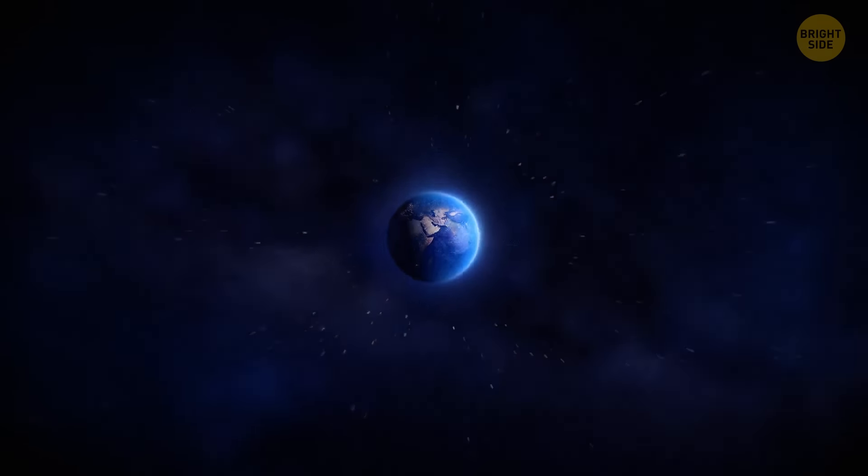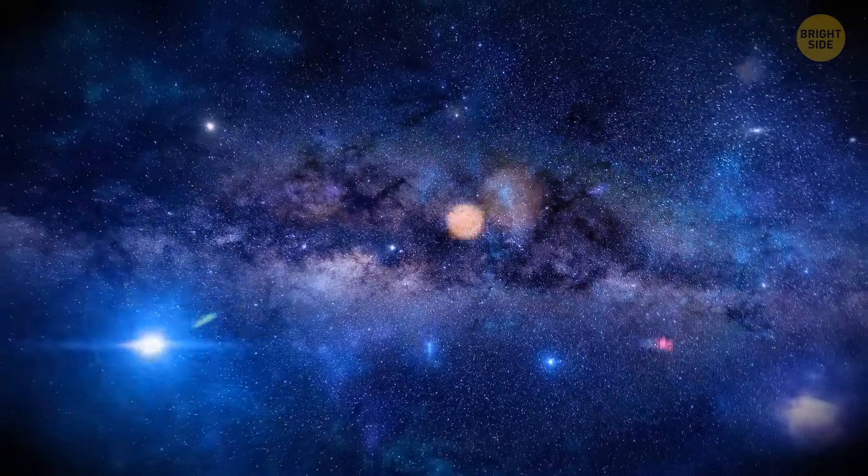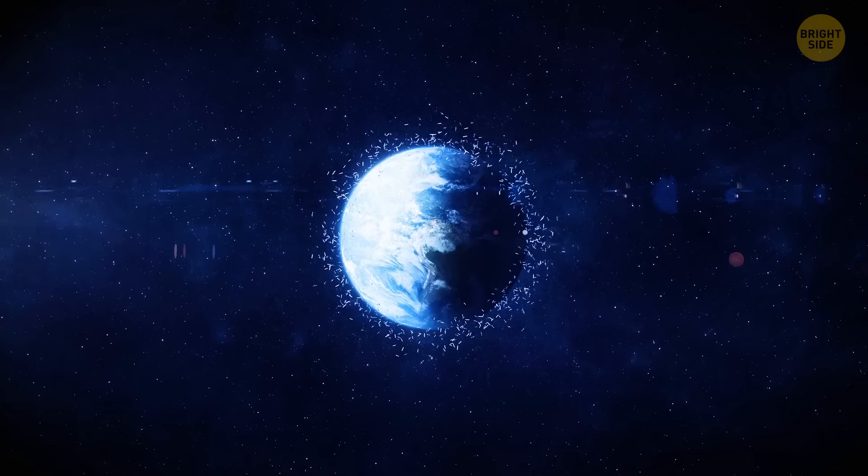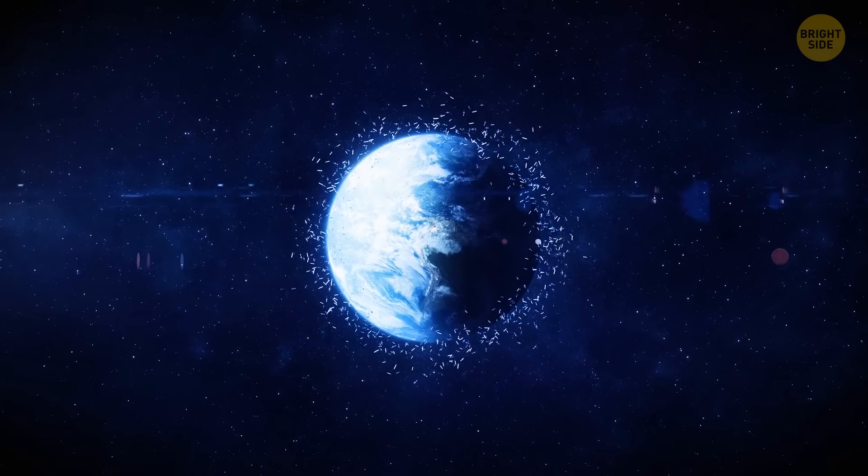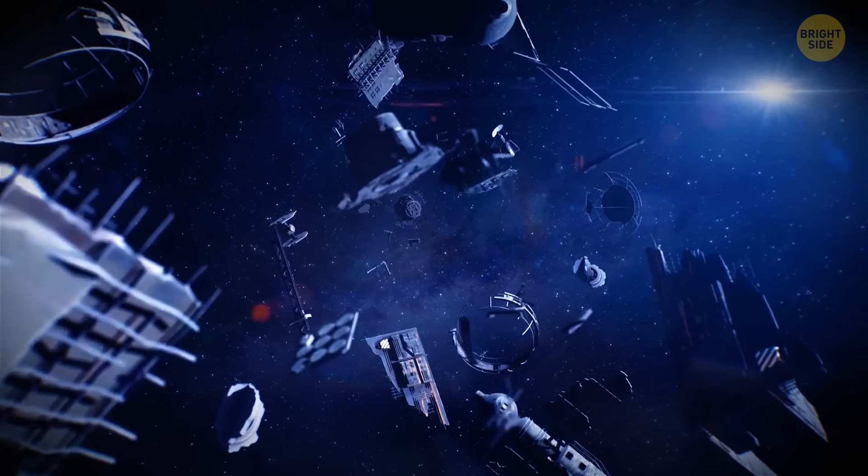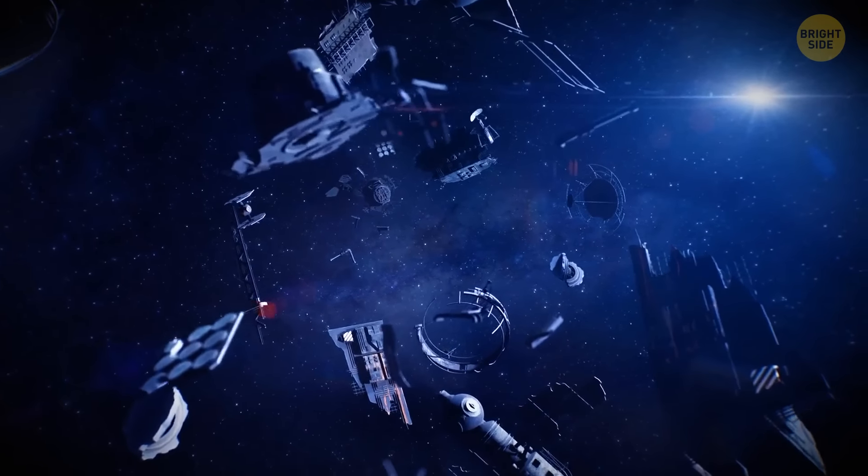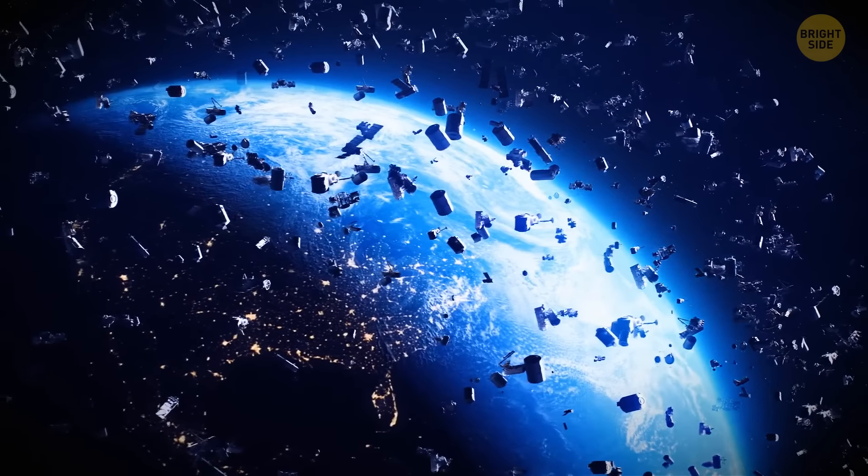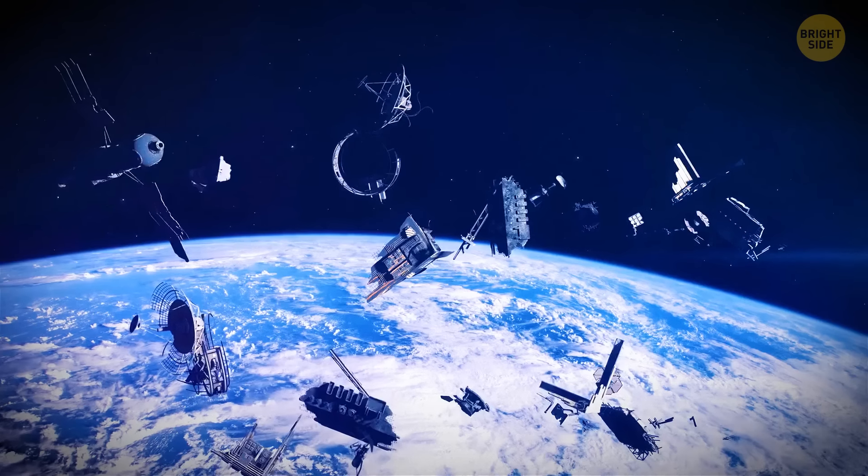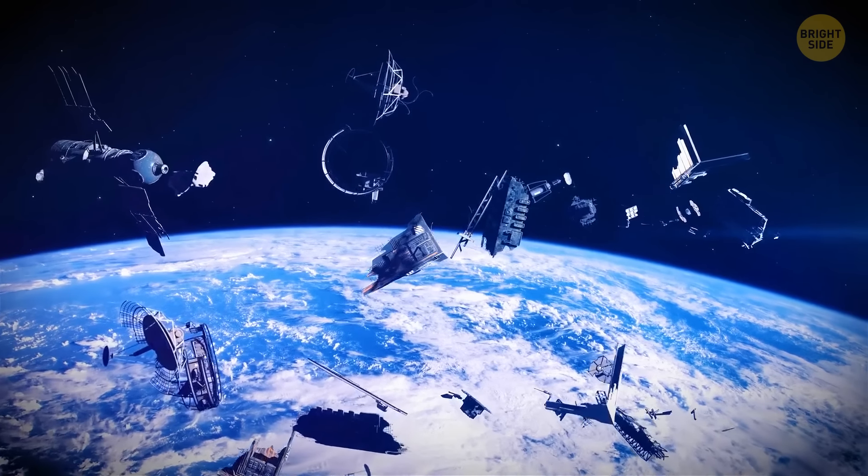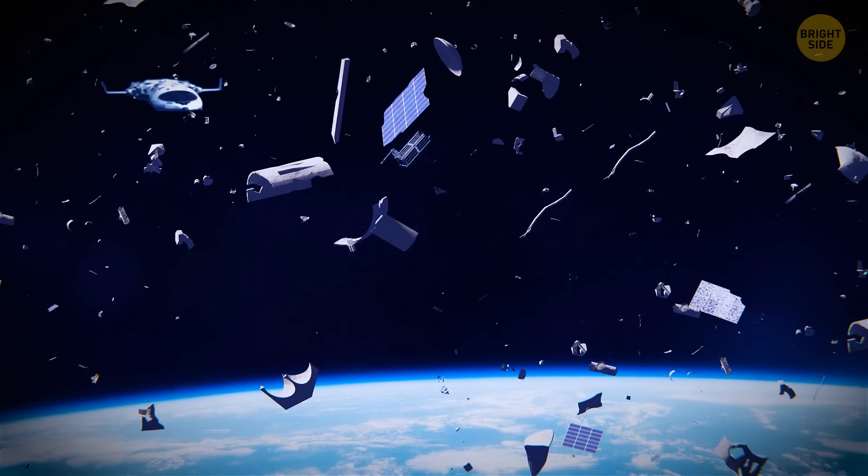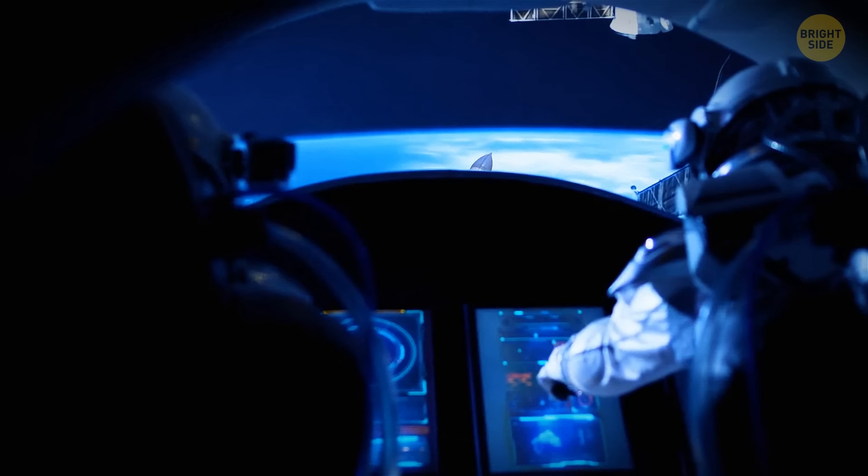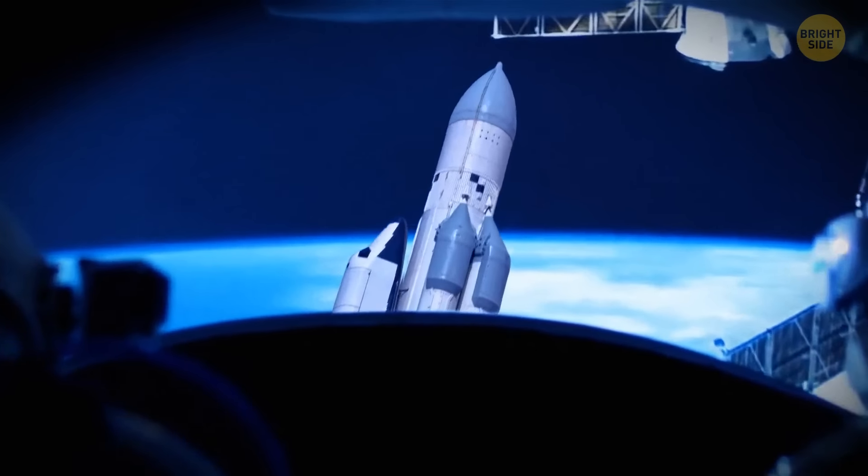First off, we have the idea that space is just this pristine, untouched wilderness. But that's not exactly true. We've been littering space with our debris for decades, everything from old satellites to rocket parts. In fact, there are over 20,000 pieces of debris orbiting Earth right now, and they're causing all sorts of problems for future space missions. So if you're planning on visiting space anytime soon, watch where you go. You never know what kind of garbage might be floating around.